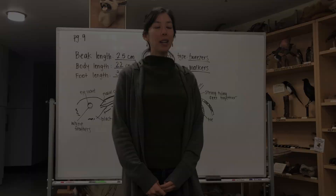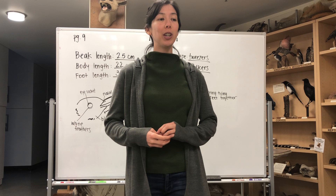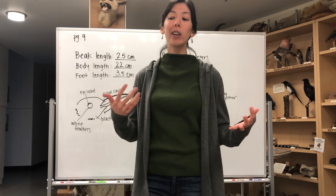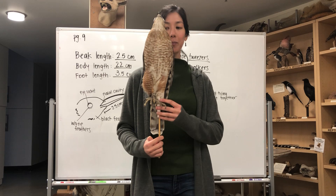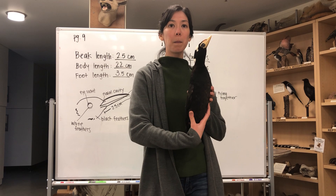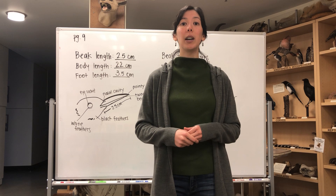We are now moving on to the specimen portion of our nature journal. Today you have three options — all birds local to Washington that we can find in our backyards, oceans, and forests. Make sure you have the photos for your chosen bird pulled up. If you need to pause the video to download those photos or make them accessible, go ahead and do that.